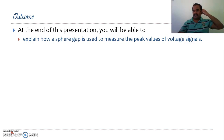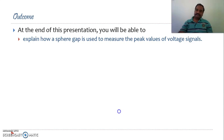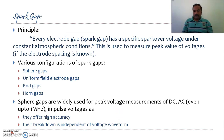Today's class is aimed at using sphere gaps particularly for the measurement of peak values of signals. By the end of this presentation, I hope you will be able to explain how a sphere gap is used for the measurement of peak values of a given voltage signal. It works on a very simple principle: every electrode gap or sphere gap has a specific spark-over voltage under given atmospheric conditions. This principle is used to measure the peak value of the given voltage signal if you know the electrode spacing.